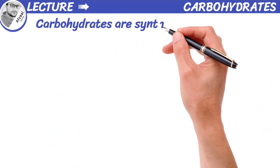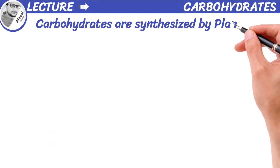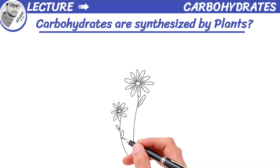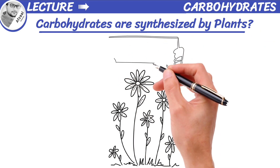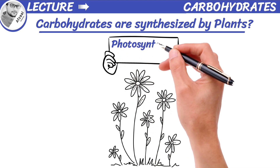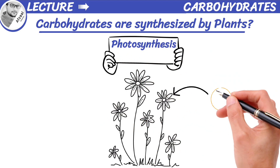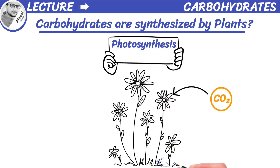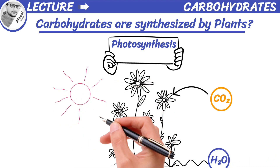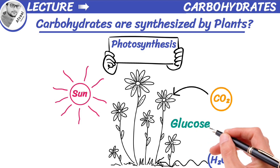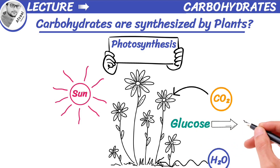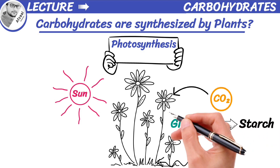Did you know that carbohydrates are synthesized by plants? Plants use a process called photosynthesis to make their own food. During this process, they take in carbon dioxide from the air and water from the soil. With the help of sunlight, they convert these raw materials into glucose, which serves as the primary source of energy for plants, or is stored in the form of starch — and both are known as carbohydrates.